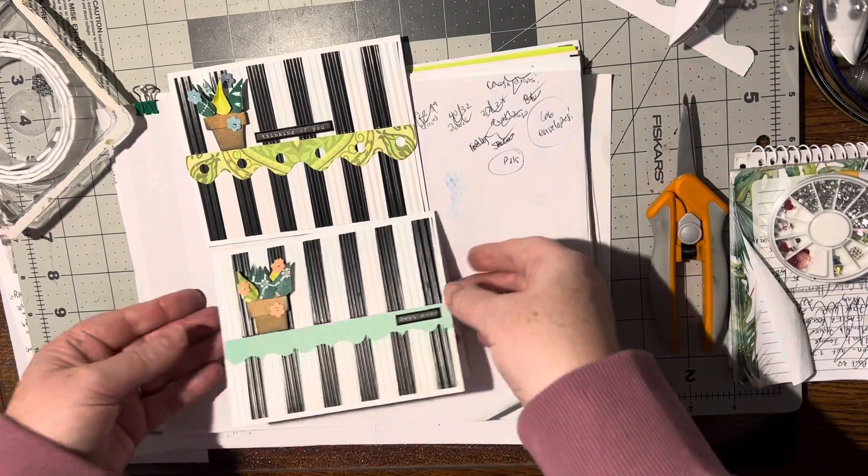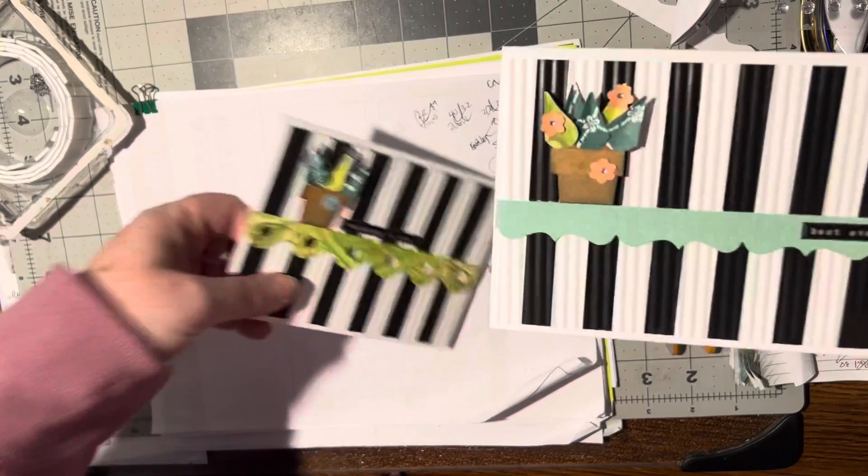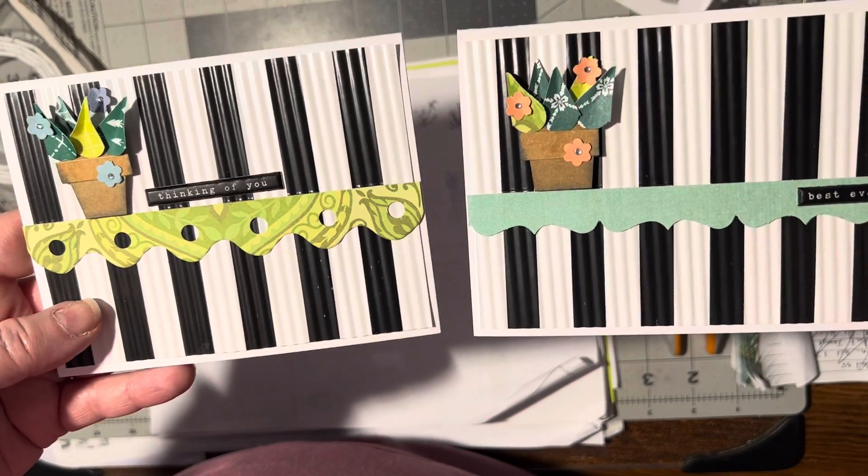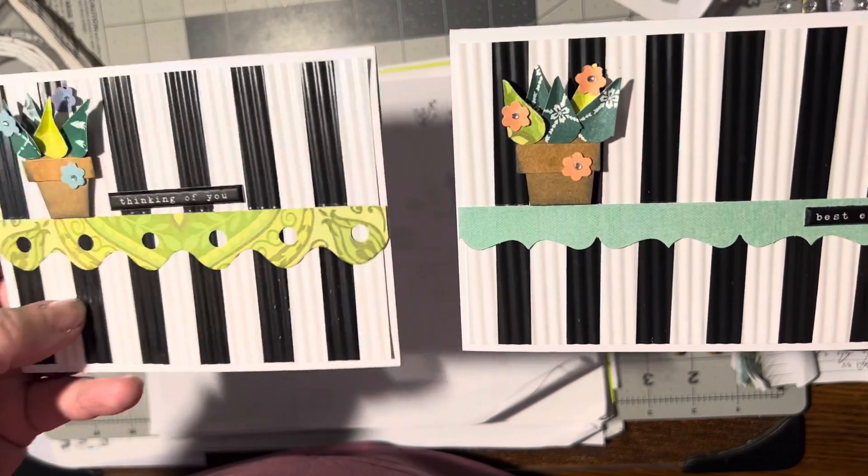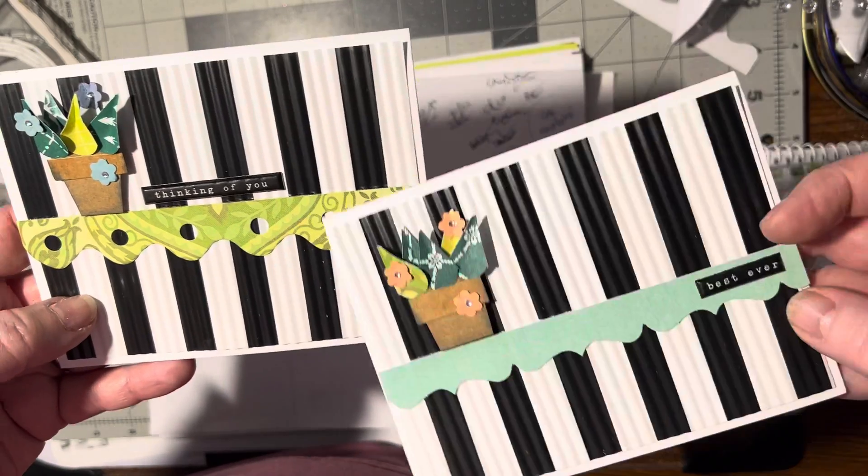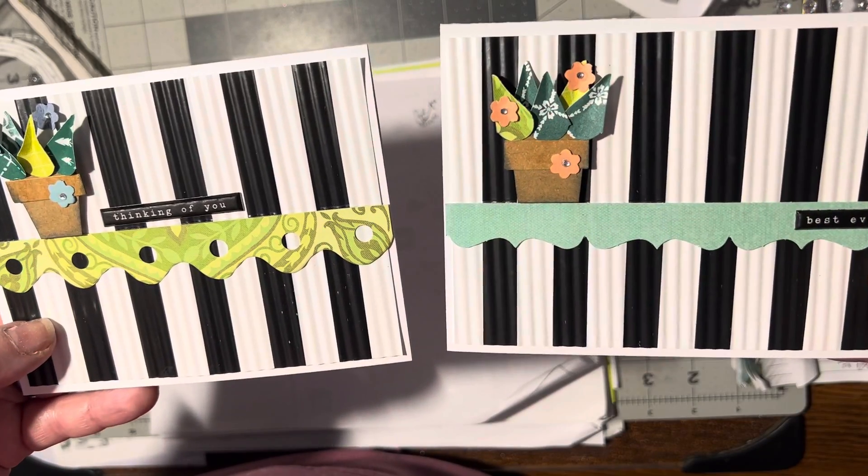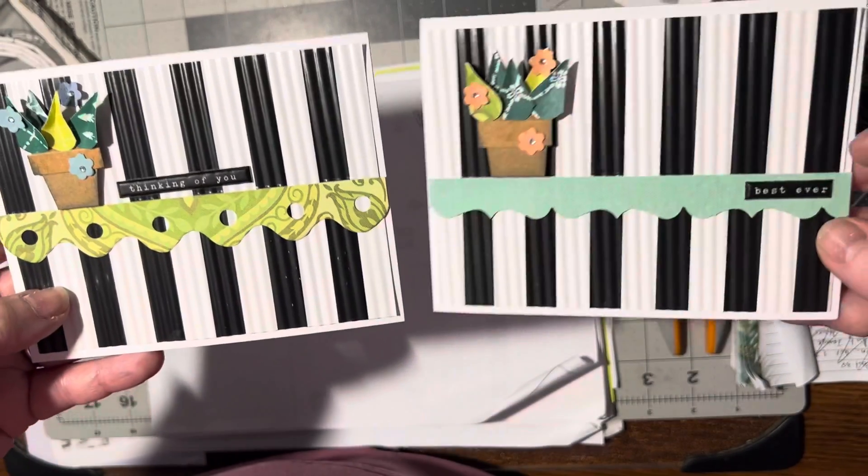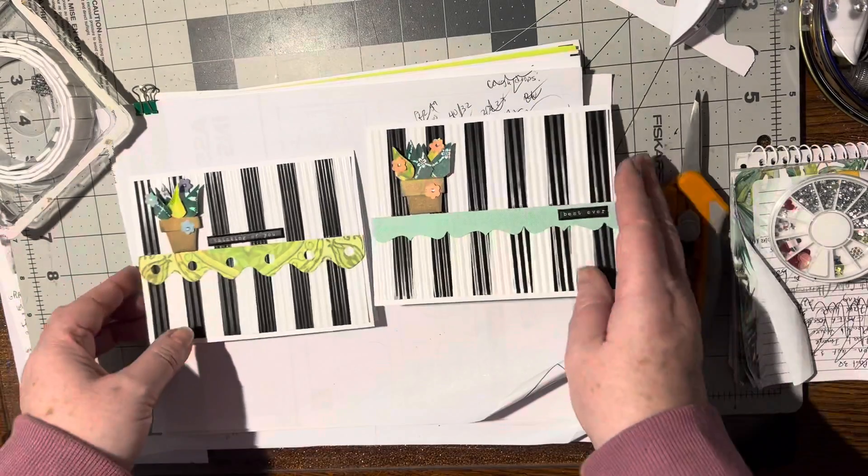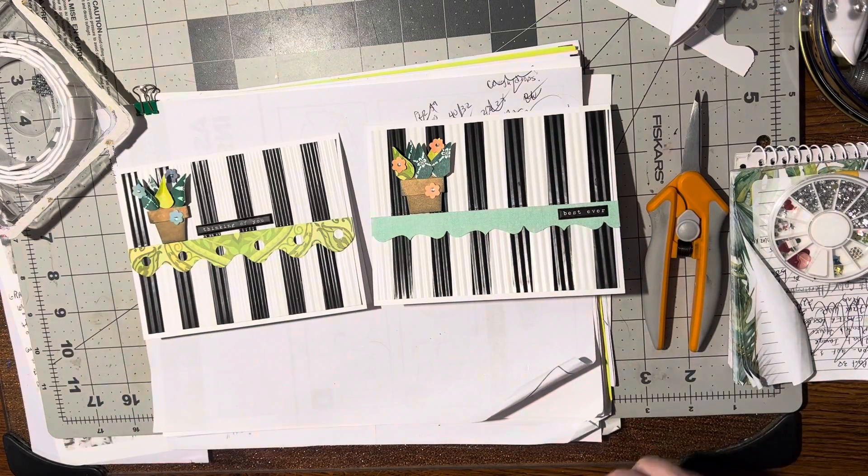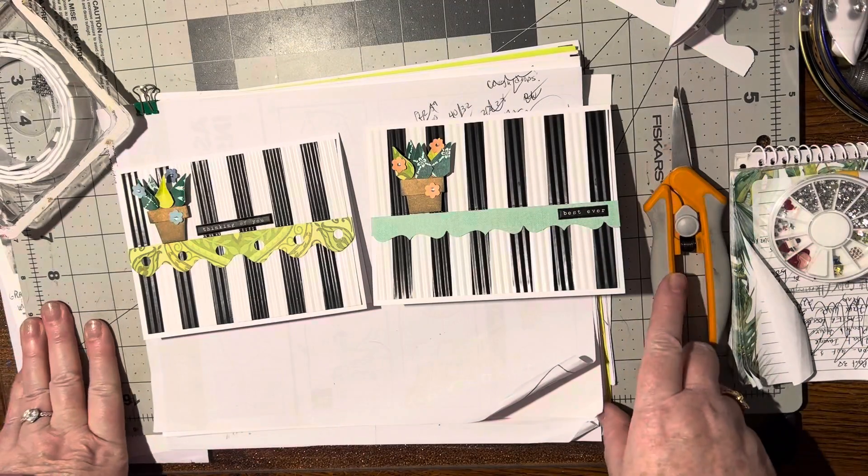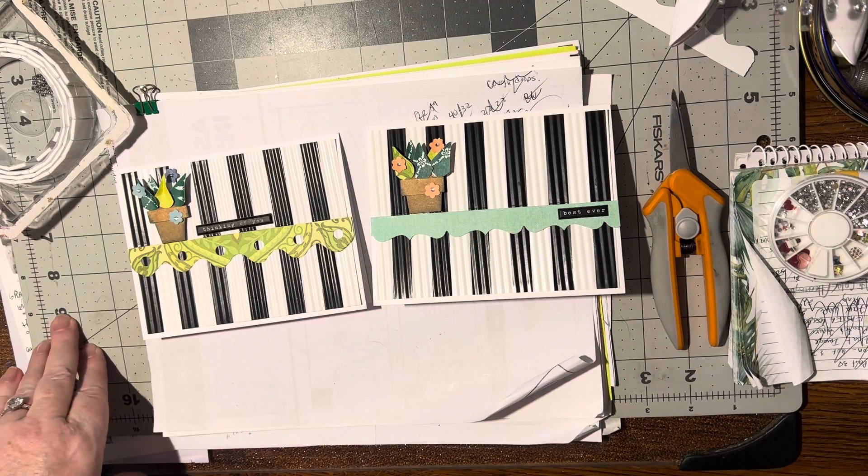All righty, so do you have a favorite? Which one do you like better? Do you like the solid green shelf, or do you like the fancy shelf that looks kind of like '60s to me? Do you like the 'thinking of you' or the 'best ever'? Let me know in the comments. And if you like this video, please give me a thumbs up. And until we meet again, happy crafting. Bye bye!